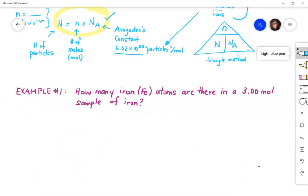So for our first example question, we have how many iron atoms are there in a 3.00 mole sample of iron? And remember iron is element Fe from the periodic table.